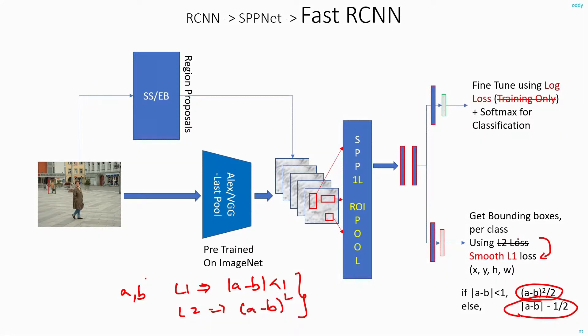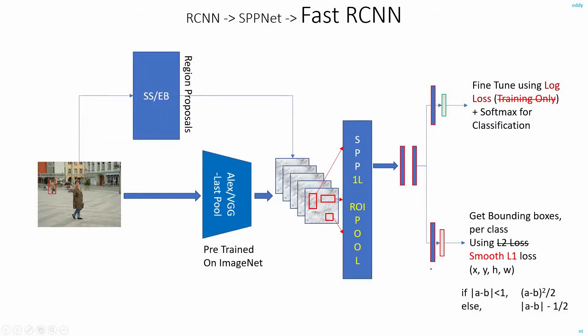As for exactly what happens practically when you take the L2 loss, L1 loss, or smooth L1 loss, a link is provided in the description for those interested in the details. But this is one key change that they made in the bounding box regressor.